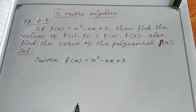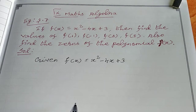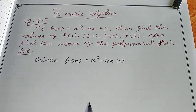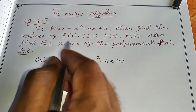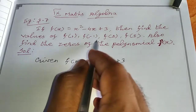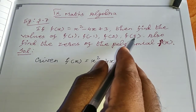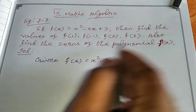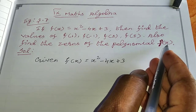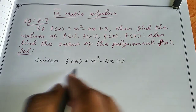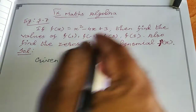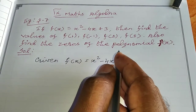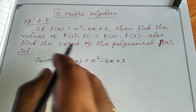Dear students, in this video we are watching 9th class algebra Example 3.7. If f of x is equal to x squared minus 4x plus 3, then find the values of f(1), f(-1), f(2), and f(3). Also find the zeros of the polynomial. First we find the four values, then we find the zeros.